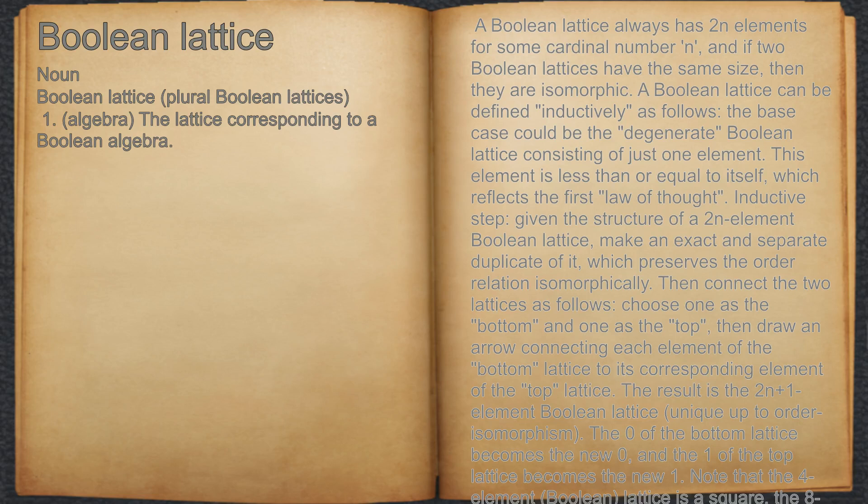The result is the 2^(n+1)-element Boolean lattice, unique up to order isomorphism. The zero of the bottom lattice becomes the new zero, and the one of the top lattice becomes the new one.